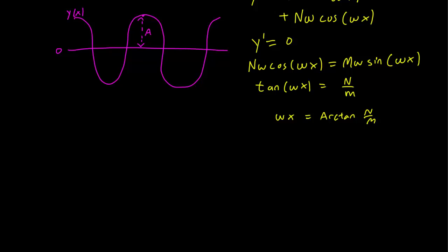So we draw a right triangle. We know that our angle ωx is going to be the angle for which the tangent is N over M. So the opposite over adjacent is N over M. But by the Pythagorean theorem, this means that this hypotenuse is going to be square root of N² plus M².